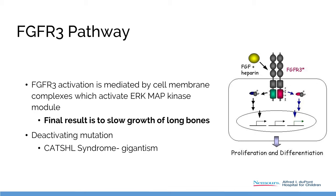If I'm an FGFR3 receptor, I have my arms waving in the extracellular world. My waist is a chondrocyte cell wall, and my feet are the tyrosine kinase in the cell cytoplasm. When a fibroblast growth factor wanders by, I grab it, my feet start moving, and the downstream effect is reduced endochondral bone formation. This is an activating mutation, so these receptors stay activated and aren't cleared as fast as normal receptors.